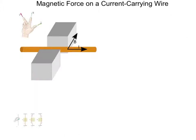We've been talking about how moving electric charges will have a force exerted on them by a magnetic field as those charges move through it. Now, if we think about current, a current moving through a wire is nothing more than a whole bunch of electric charges moving from one point to another. So it should make sense that if we were to put a current-carrying wire — a wire that has a current flowing through it — into a magnetic field, then that entire wire should experience a force because of those moving charges in that magnetic field.